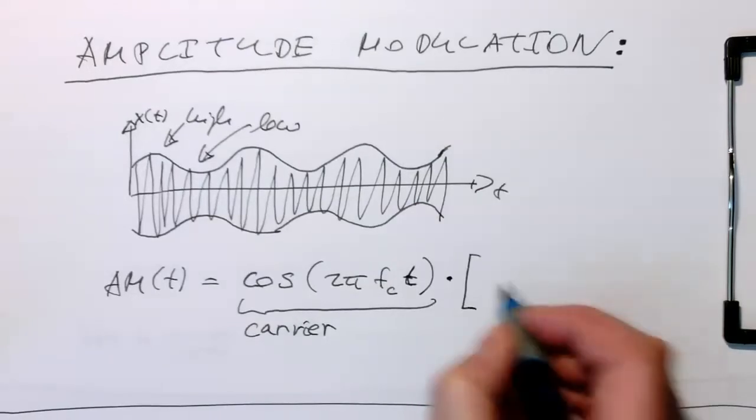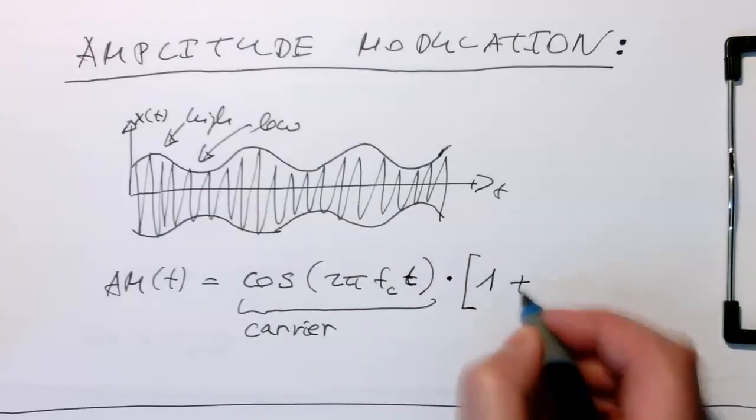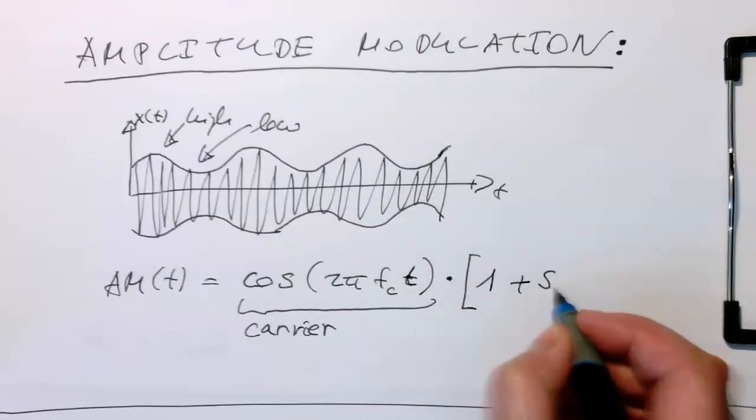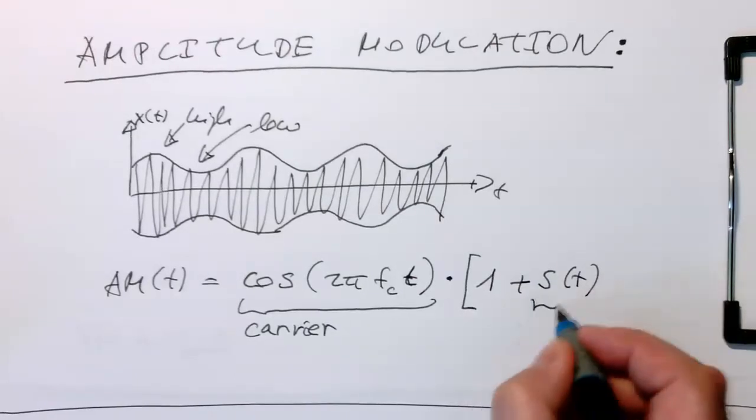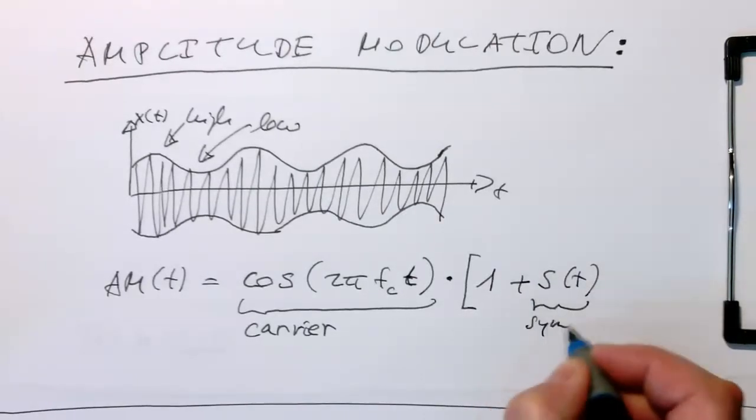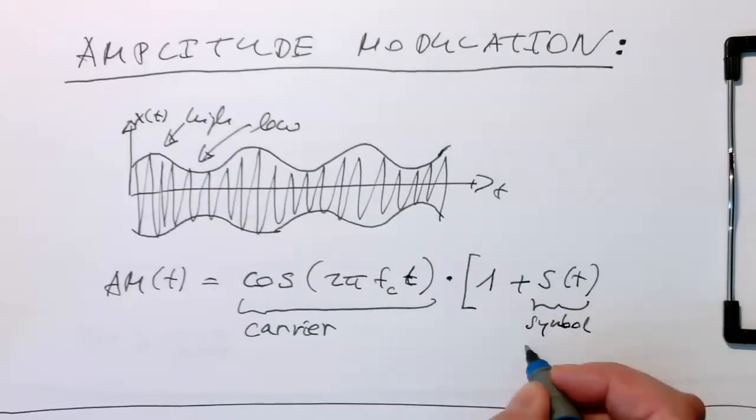And so now we just need to amplitude modulate this carrier with our symbols. So this is our base amplitude - cosine multiplied by one. And then we've got here the s(t). So that's our symbol.